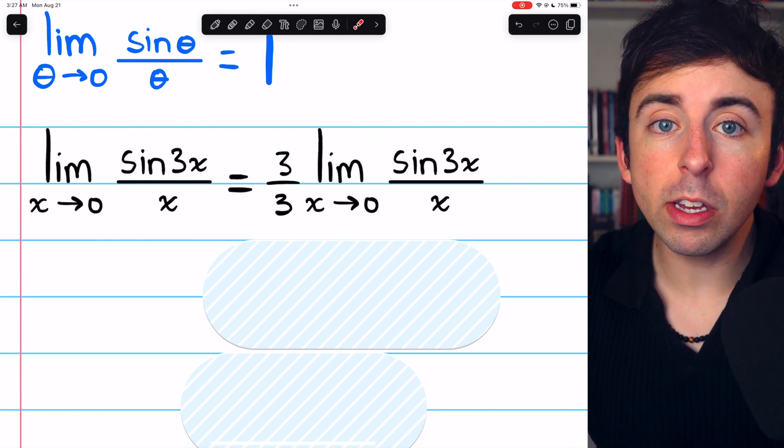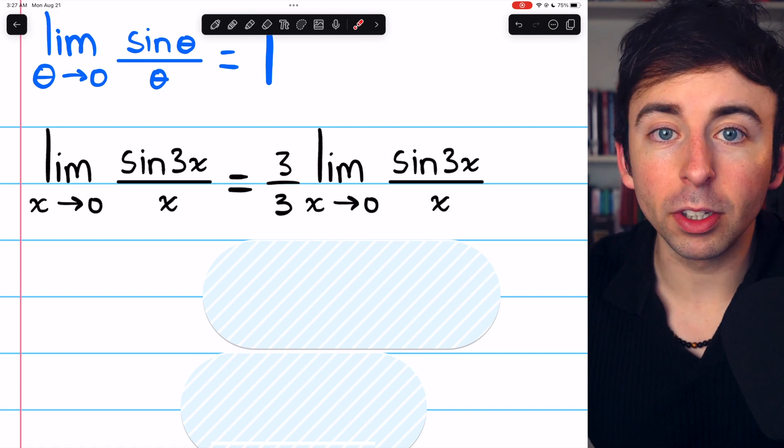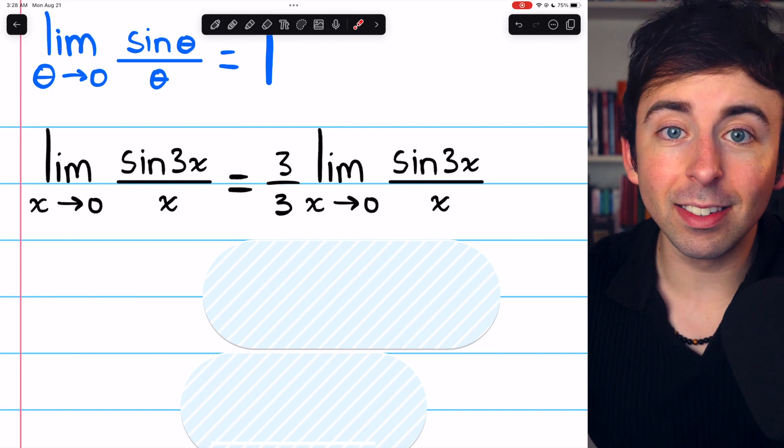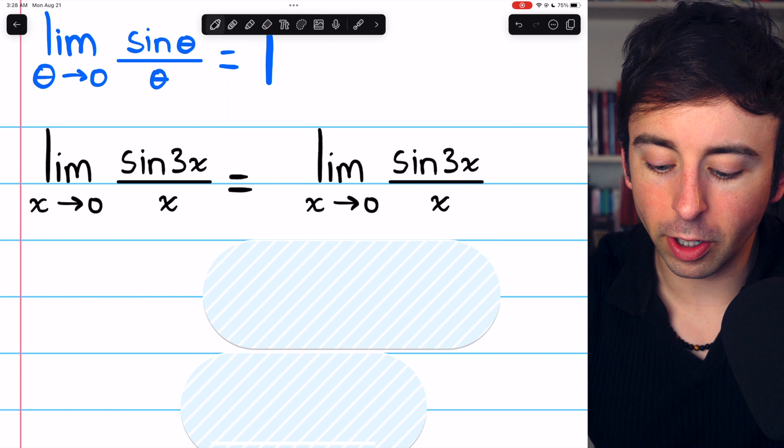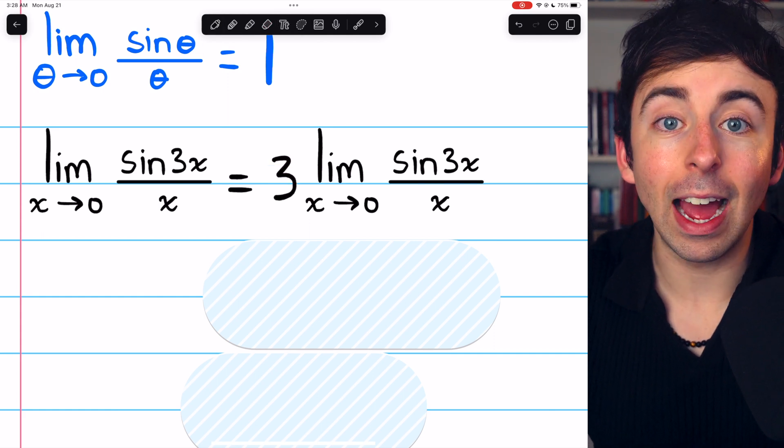However, we could take either of those factors and bring them inside the limit. Multiplying a limit by a constant on the inside or outside is the same thing. So let's bring the factor of 1 third into the limit and we'll leave the factor of 3 outside of it.